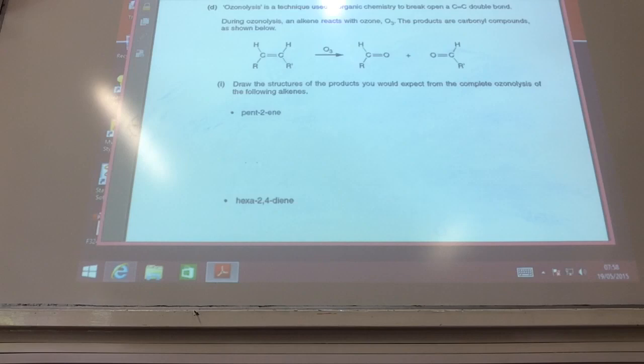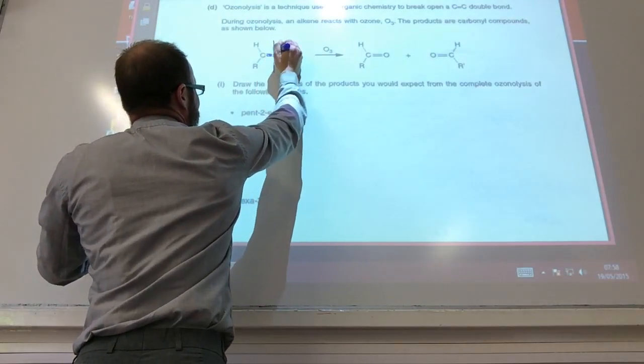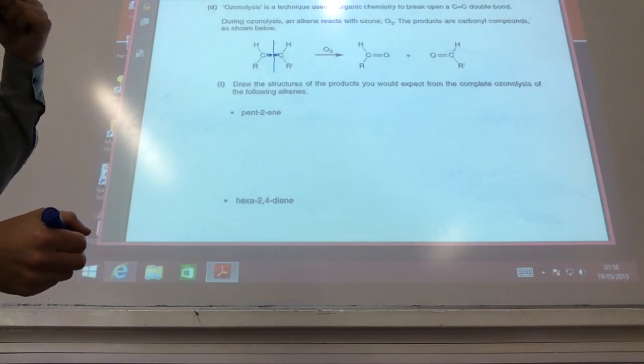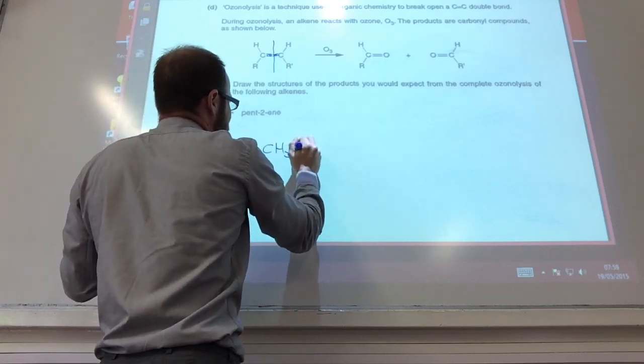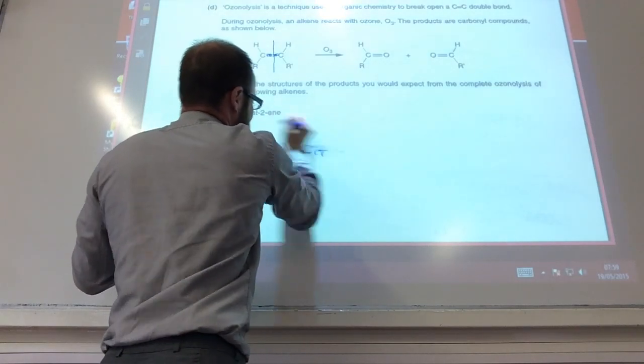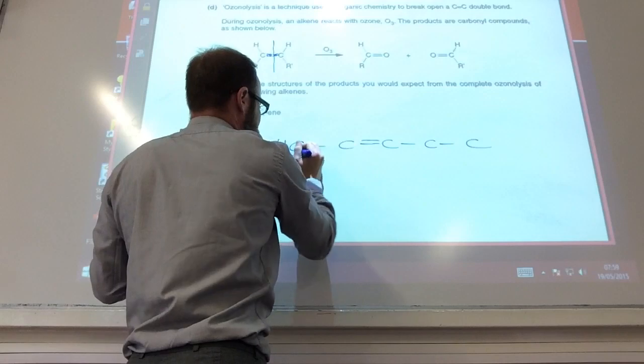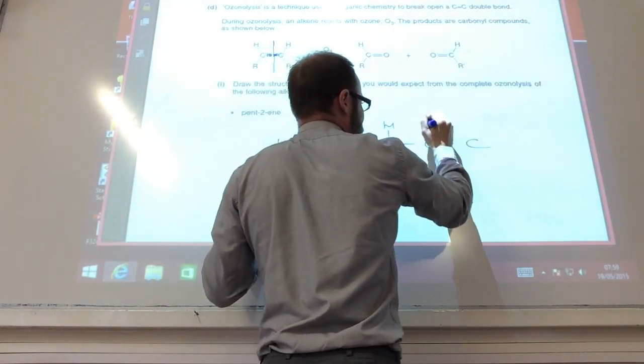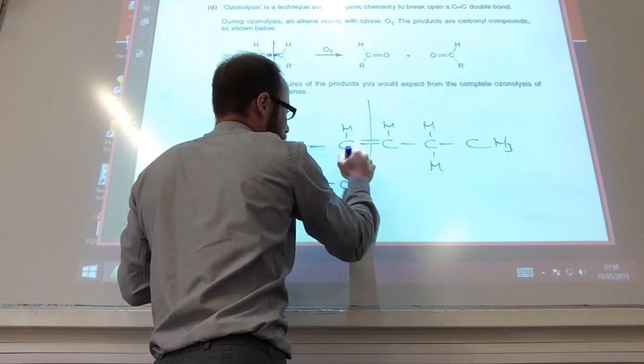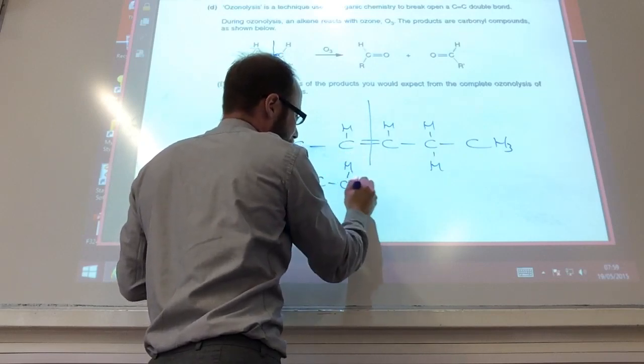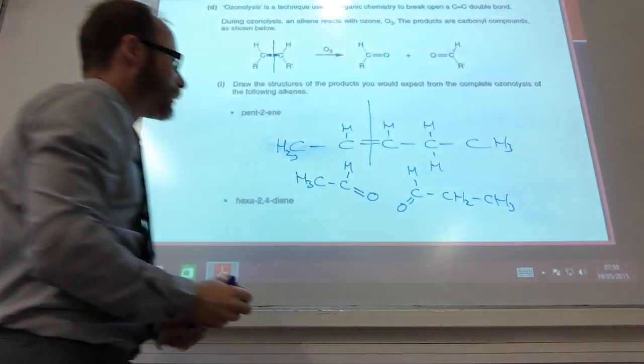Okay, so ozonolysis is just a technique used to break open a carbon-carbon double bond, and they've given me an example here. It basically just breaks that bond there, and that becomes C double bond O, and that becomes C double bond O. So I'll draw the structure for pent-2-ene. I've got 1, 2, 3, 4, 5 carbons, and the double bond is going to go on that one with CH3. It's going to break that bond there, so it's going to end up with that, ends up with an oxygen, and equally that ends up with an oxygen. So those are my two products there.